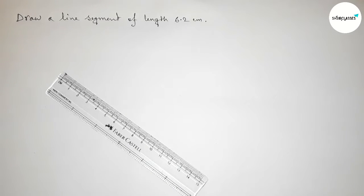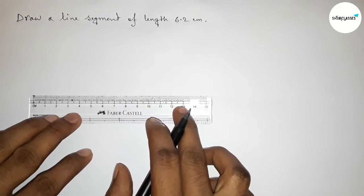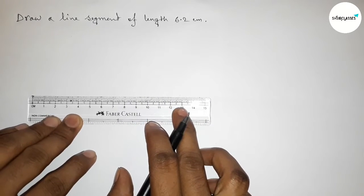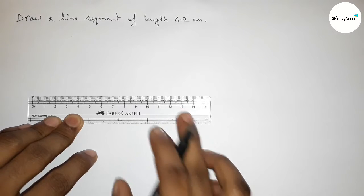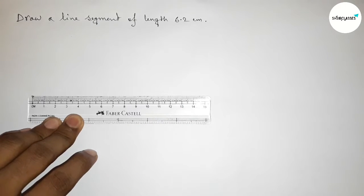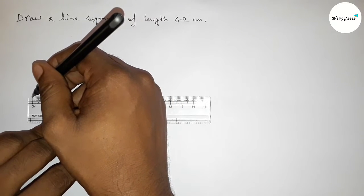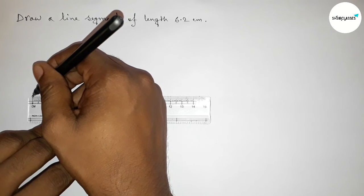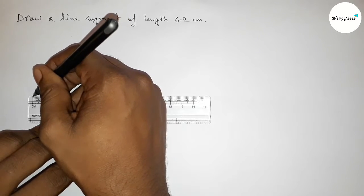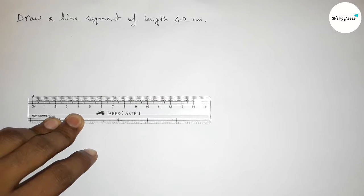First, with the help of a scale, putting here the scale perfectly, then measuring the length 6.2 centimeters. So first marking here. This is starting zero centimeter.